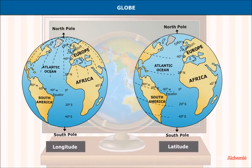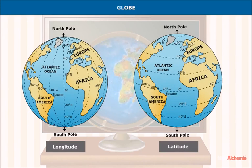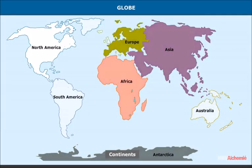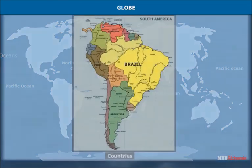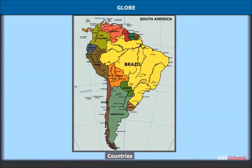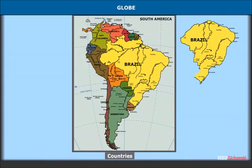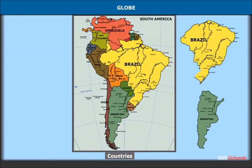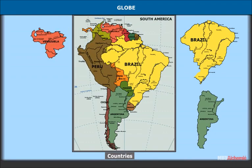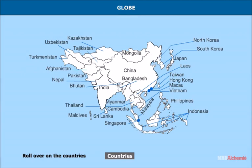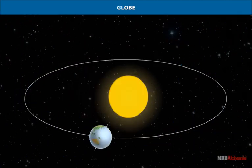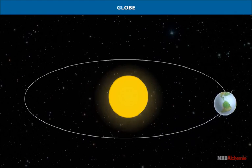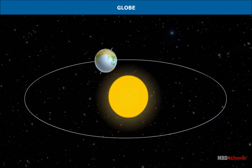The globe also traces lines of latitudes and longitudes. It shows the relative size and shape of continents, oceans, countries, etc., as accurately as possible. It can be rotated to understand how the earth moves in space with respect to the sun.